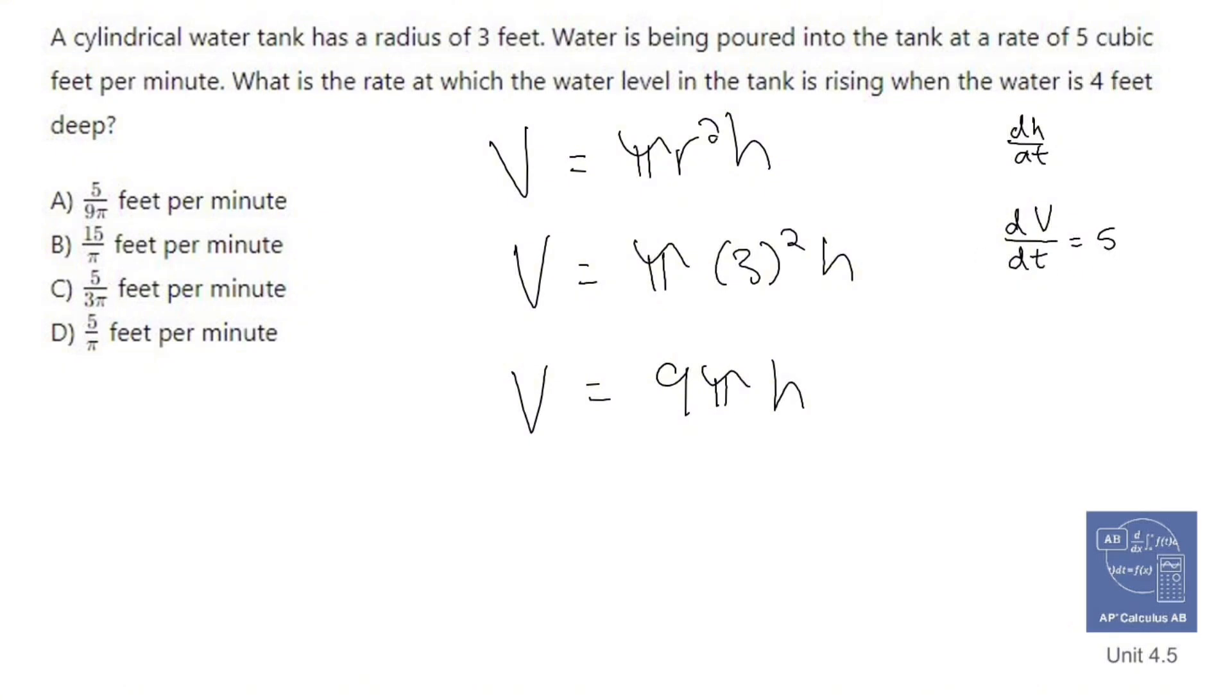Alright, so let's plug in what we know. Well, first off, I can't even do that. Since this is related rates, I have to d dt both sides. So let's d dt both sides. The derivative of v with respect to t is dv dt. 9 is 9, pi is pi. The derivative of h with respect to t is dh dt. So 9 pi dh dt.